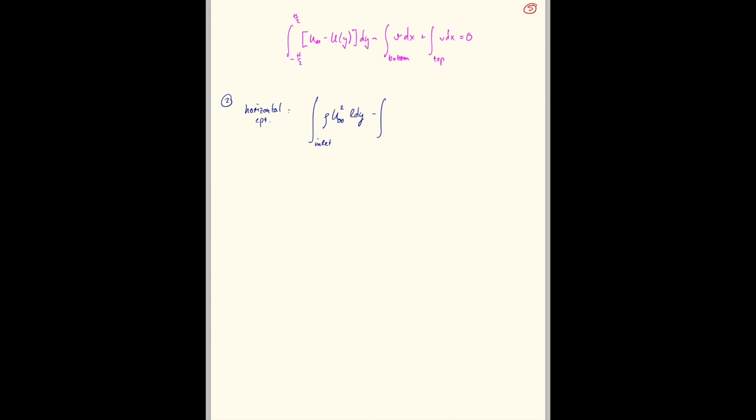Minus the outlet, which is rho u y, u of y squared, L dy, plus contribution through the top, which is rho u infinity v L dx, minus rho u infinity v L dx integrated over the bottom. And that has to be equal to minus fd.